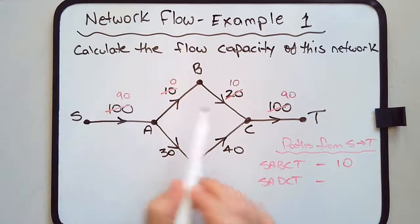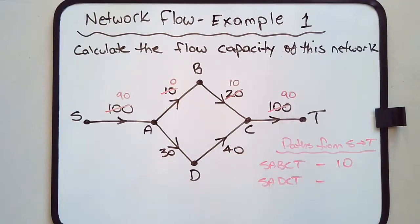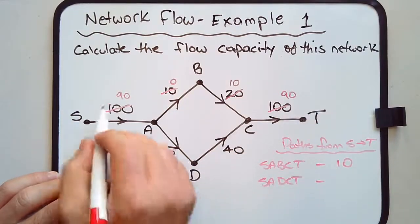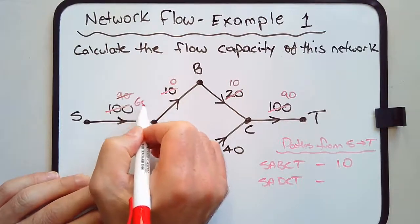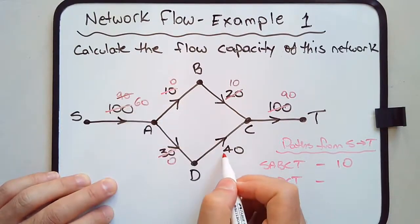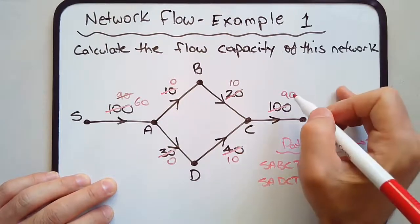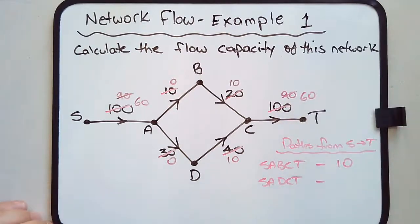Now we need to use the updated numbers in red. Out of 90, 30, 40, and 90, the 30 is the smallest number. So we subtract 30 from all these weights. SA becomes 60, AD becomes 0, DC becomes 10, and CT becomes 60.